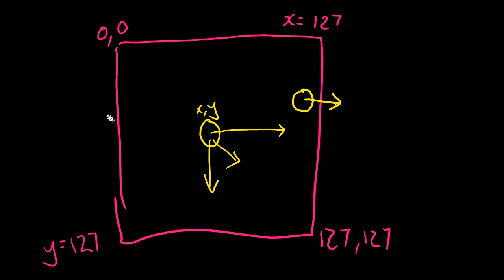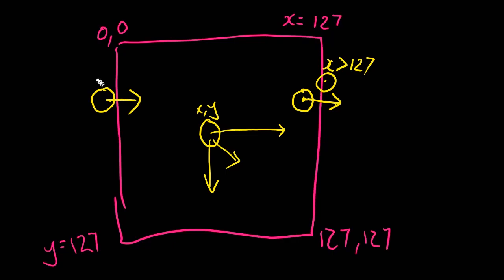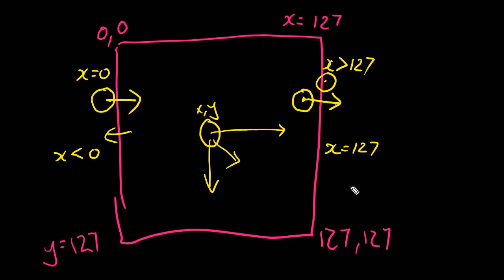For wrap-around, the character gets to the edge, comes off the screen, and reappears on the other side. To get this to work we simply take the x value — if we're going off this side, when x is greater than 127, we set x to 0 so the object reappears over there. And if it went the other way, as soon as x is less than 0, we set x to equal 127.